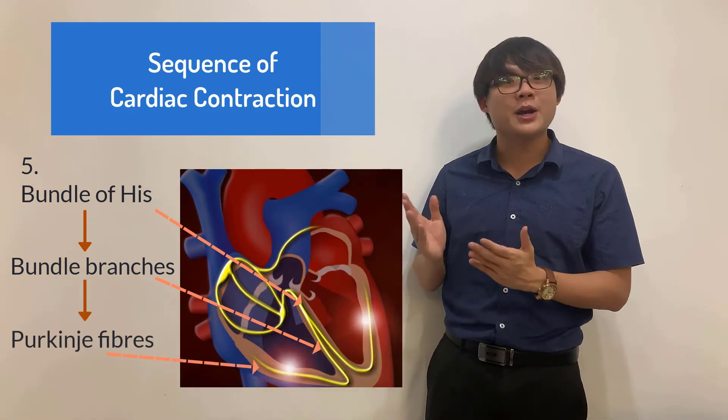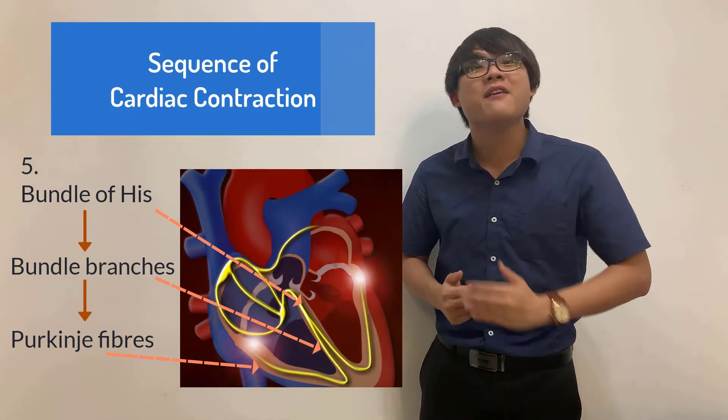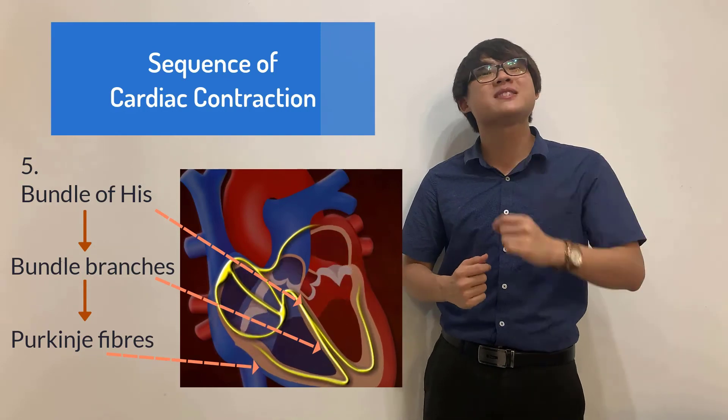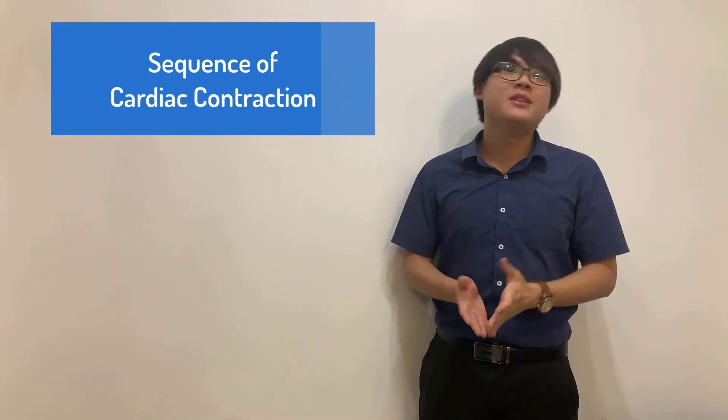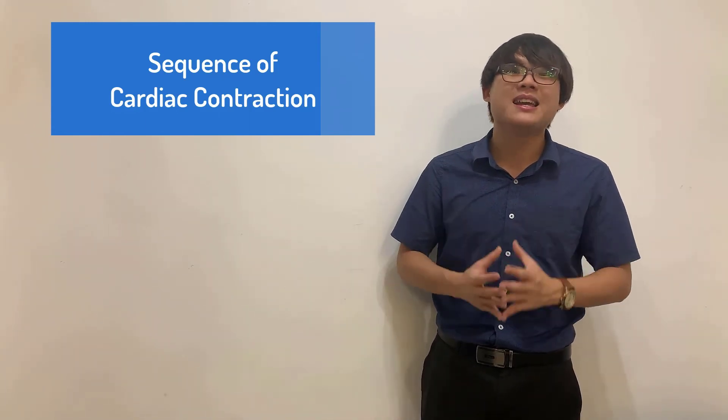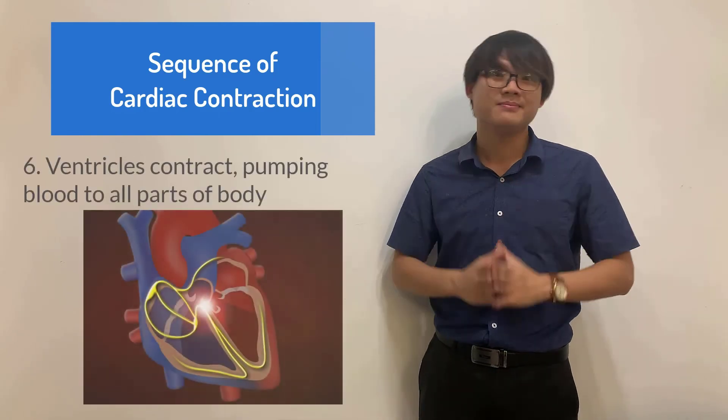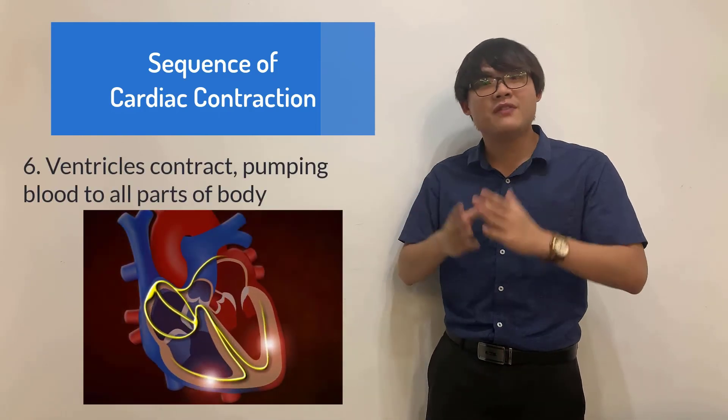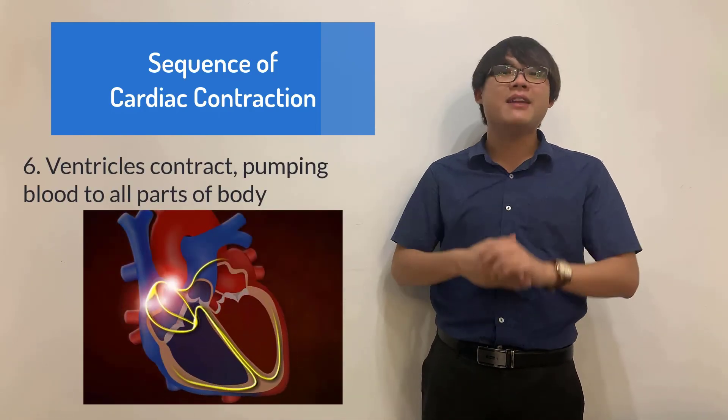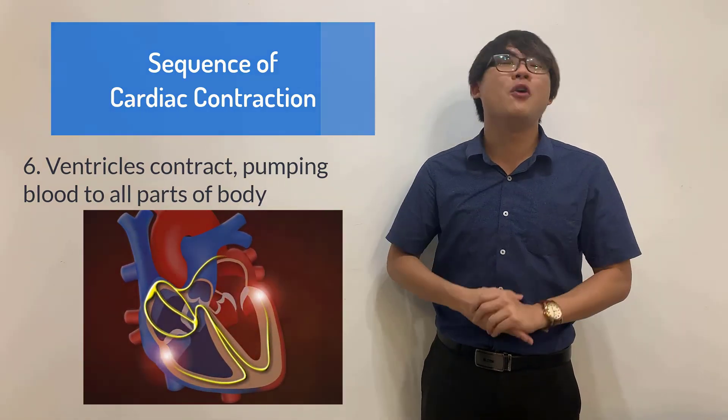As you can see from the diagram, Purkinje fibers are at the walls of the ventricles. If the electrical signals reach the Purkinje fibers, literally it means that the ventricles are accepting electrical impulses and therefore they will start to contract. When the ventricles contract, blood would then flow out from the ventricles to the rest of the body.